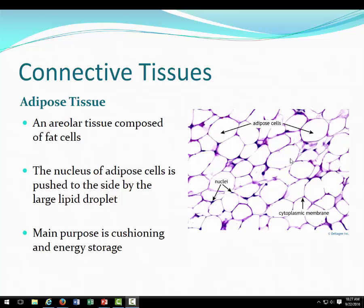We grow fat cells during development up to puberty. Once we hit puberty and we're done growing, we have all the fat cells we're ever going to have. From that point on we only control the size of those fat cells. When we lose weight, we're shrinking the fat cells — we're not reducing the number of fat cells.